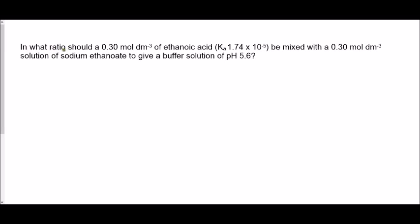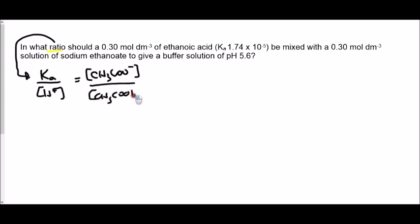The question we've been asked is about a ratio. Pause the video now and have a go at this buffers calculation. If we're being asked about a ratio, that should point you to rearranging your Ka expression to look like this. Remember that when you've been given the name of the acid you're working with, you must put in the formulae into this Ka expression, just in case you're getting any method marks for your equation. So we've got ethanoic acid, we've got a Ka value, and we've got a pH value, so to get H⁺ we can do 10 to the minus 5.6.